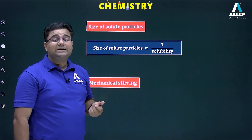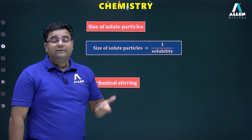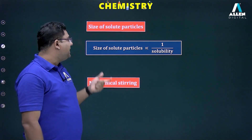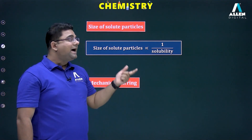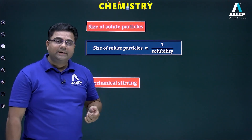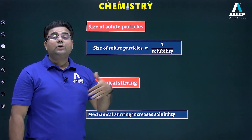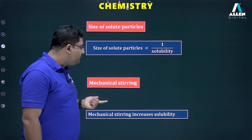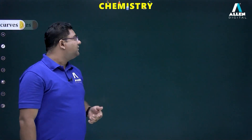Size of the particle: if the particle size is large, solubility is less; if particle size is small, solubility is higher — particle size is inversely proportional to solubility. Mechanical stirring: if we increase the speed of mechanical stirring, the solubility of the solute in the solvent also increases.